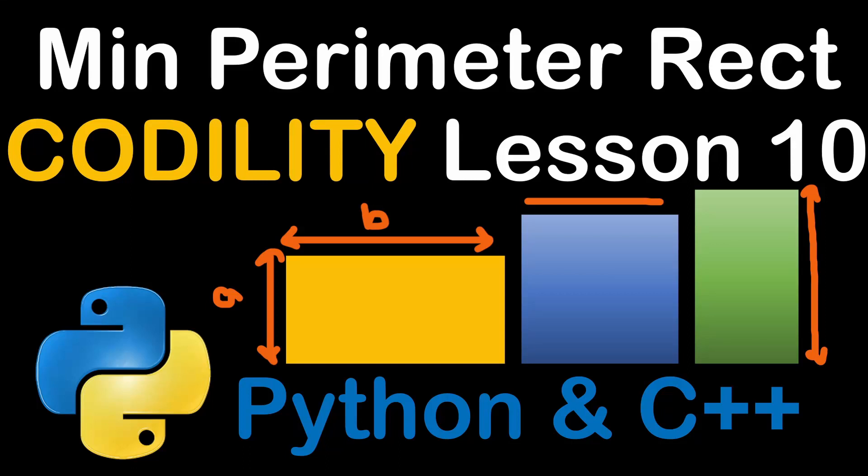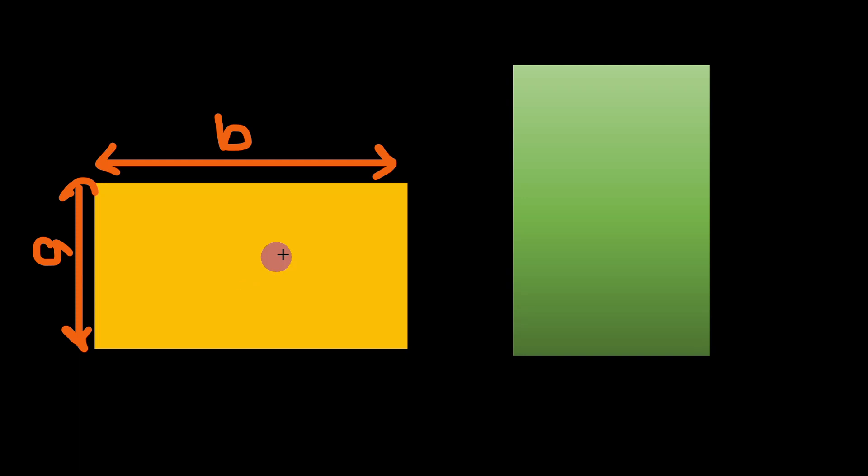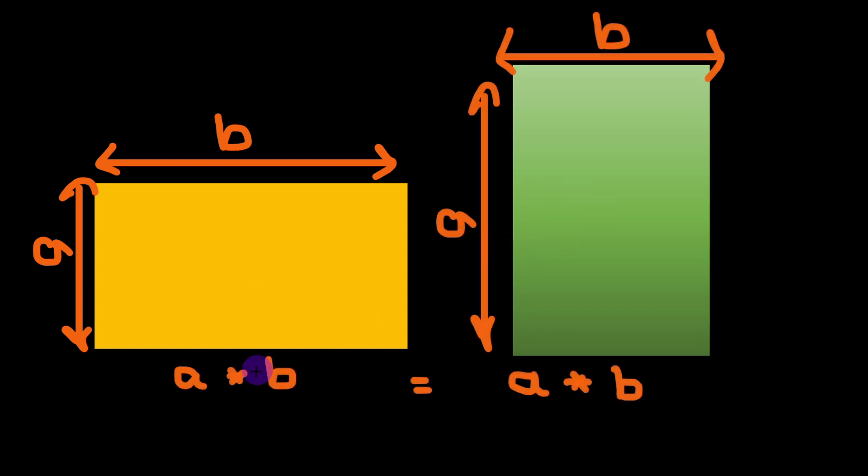Hello everyone and welcome back to one more video. We are solving the minimum perimeter rectangle from lesson number 10. We are given an area of a rectangle and this area can fit different dimensions. For example, instead of taking this shape, we can apply a different shape and still we would have A times B for the first shape equal to A times B for the second shape, meaning the area in the first shape is equal to the area of the second shape although we have different dimensions in the second case.